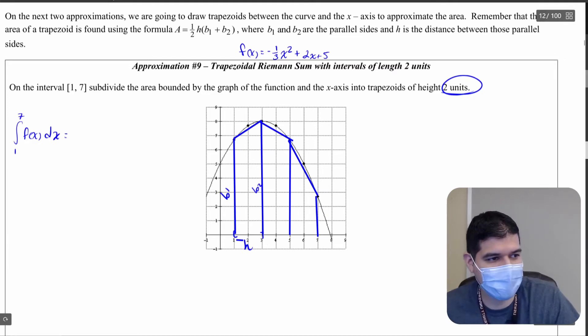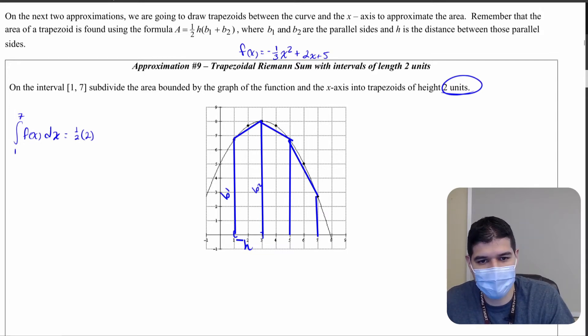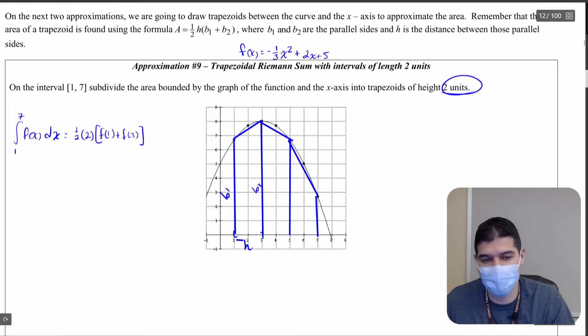So as I write down these calculations I see that I'm going to have one half times two because our height, the length of our height, is going to be two. And then in our first trapezoid I'm going to have base one which is calculated at f of one plus base two which is calculated at f of three, and that gets me my first trapezoid.